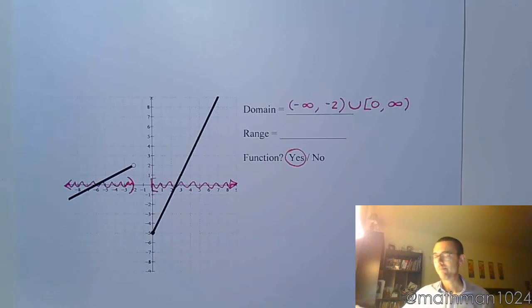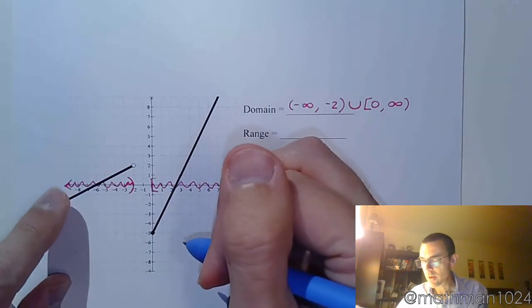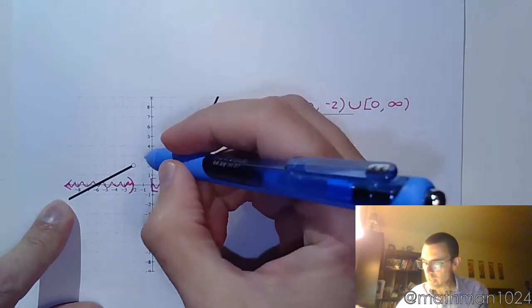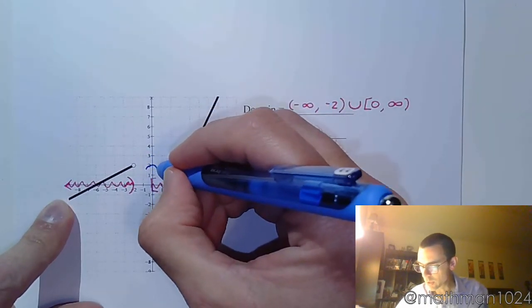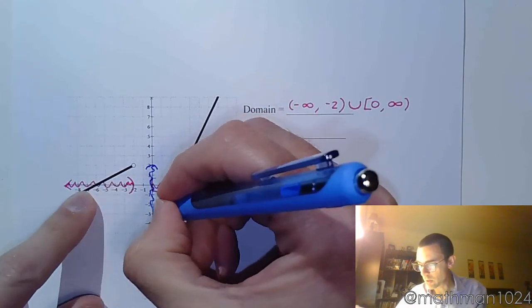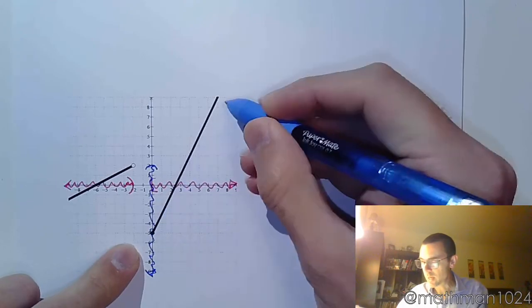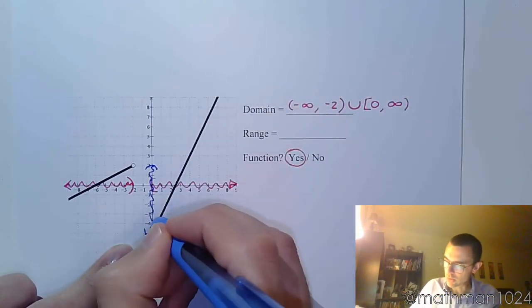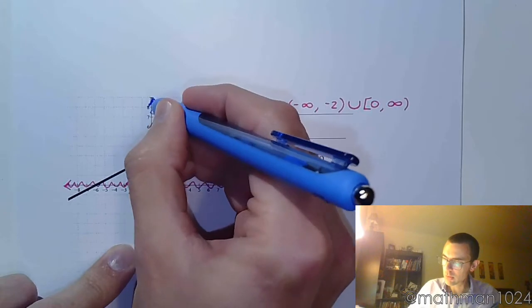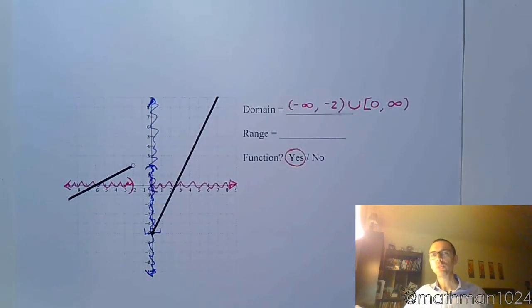Now what about your range? This one might be a little bit trickier. If I look at this piece right here, he's kind of starting here at 2, y equals 2, and he's going all the way down. But this piece right here starts at negative 5, and he goes all the way up. And so it's our